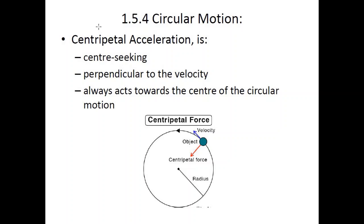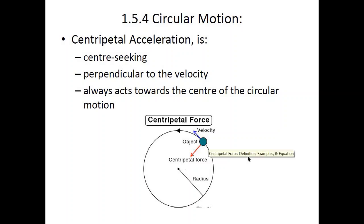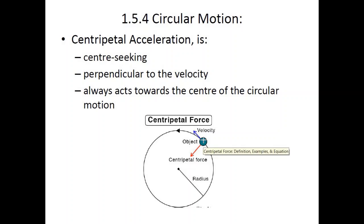It always acts toward the center of the circular motion. Here's a diagram: this is the radius of the circular path, this is the object moving in a circular direction, and velocity is in that direction. The force is towards the center, and the velocity and force are always perpendicular — at a 90-degree angle with each other. If given such a diagram and asked where the resultant force would be, always draw an arrow towards the center. If this force were to disappear, the object would continue in a straight path.